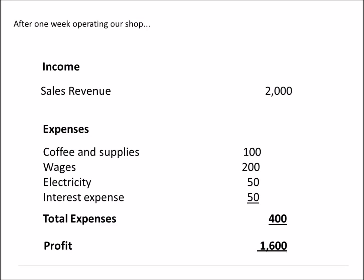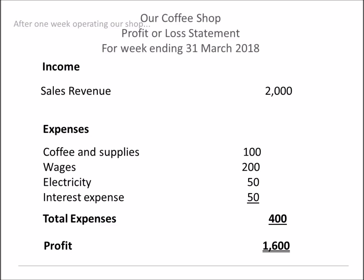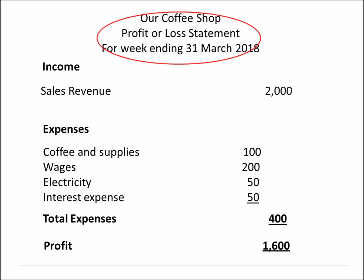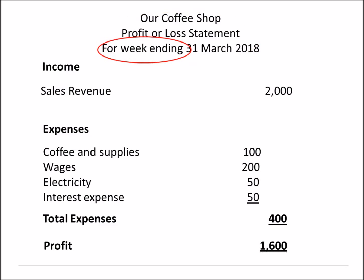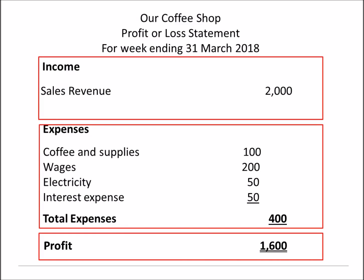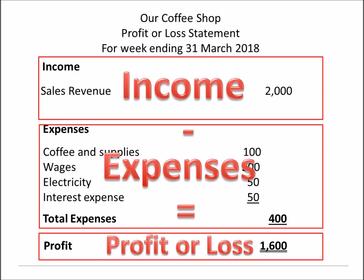What we've just created is the second of our financial statements — this is the profit or loss statement. Again, the heading is important. Make sure you have the name of the business, the name of the statement, and in this case the time period 'for the week ending' because it shows us all the income and expenses that were incurred during that time. Income less expenses equals profit, or loss if the expenses exceed the income.